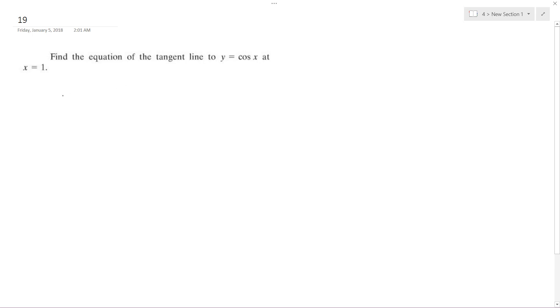First thing we do to find the slope at any given point along y equals cosine x is take the derivative. So y prime is going to be equal to d dx of cosine x, which is equal to negative sine of x.